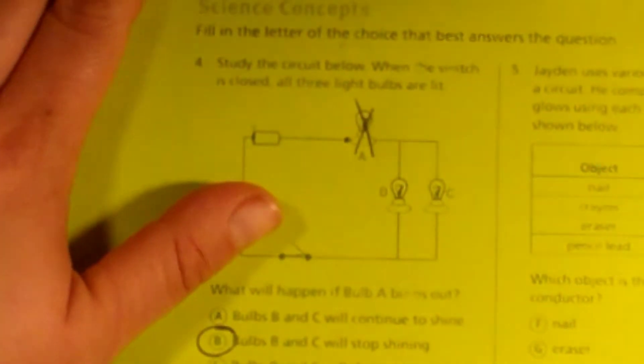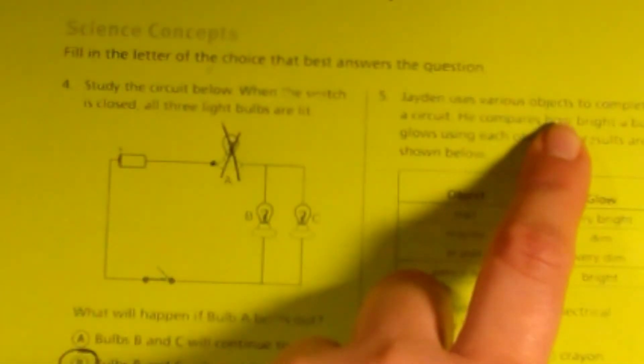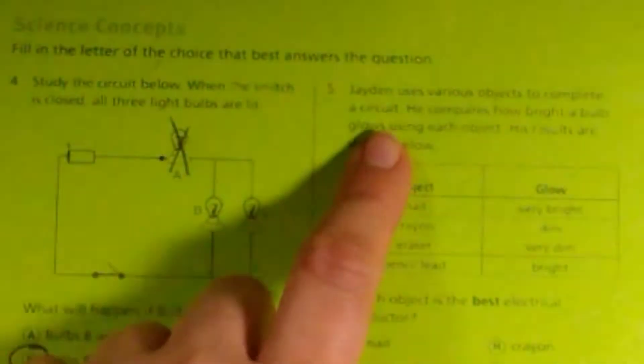Number five, Jaden uses a variety of objects to complete a circuit. He compares how bright a bulb glows using each object. His results are shown below.